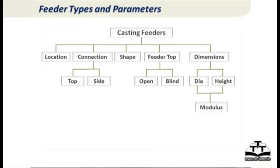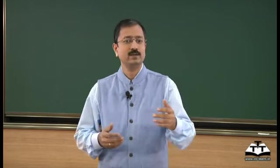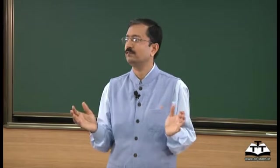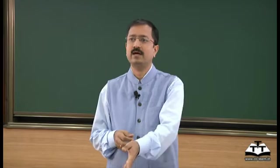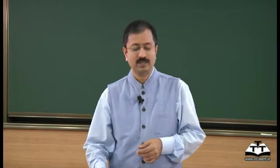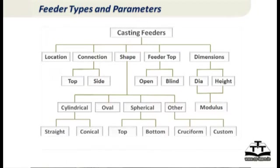There are several different types of feeders to classify. In terms of location on a casting, we say top feeder when the feeder is above the casting, and side feeder when it is to the side. The top itself can be open or blind. In terms of shape, there is a large variety: basic standard cylindrical, which can be straight, conical, or tapered — with straight taper or reverse taper — and then spherical, oval, and cruciform shapes are also possible.